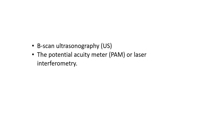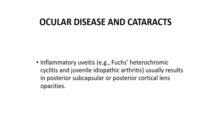Ocular diseases and cataracts: inflammatory uveitis — for example, Fuchs heterochromic cyclitis and juvenile idiopathic arthritis — usually results in posterior subcapsular or posterior cortical lens opacities.